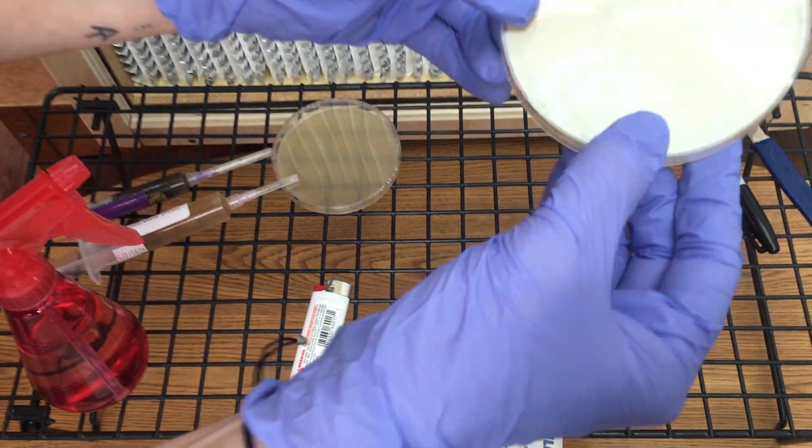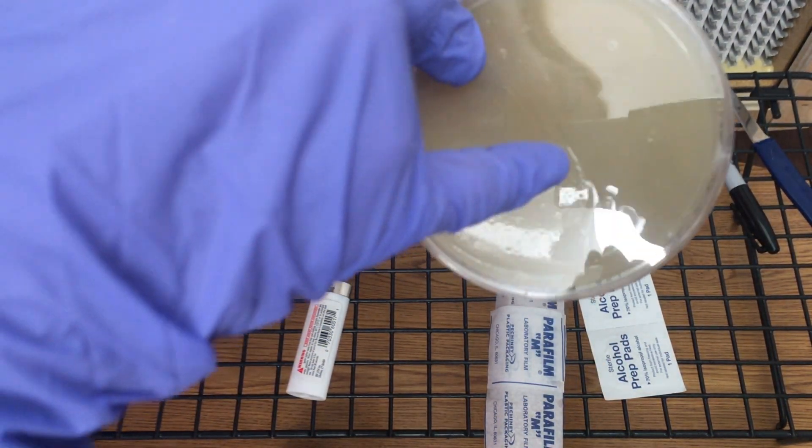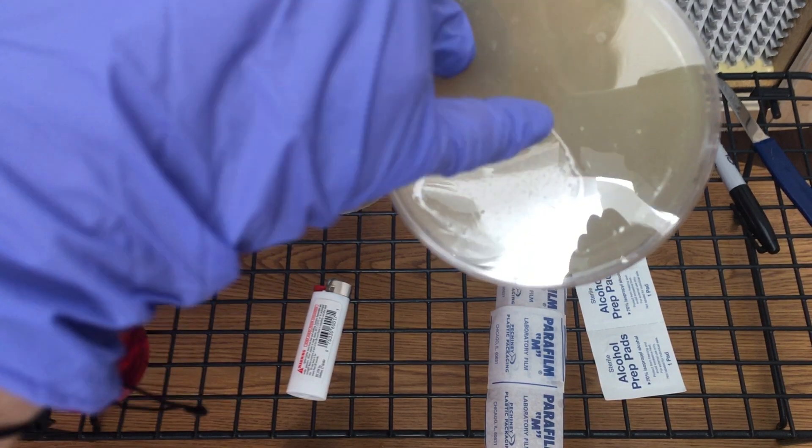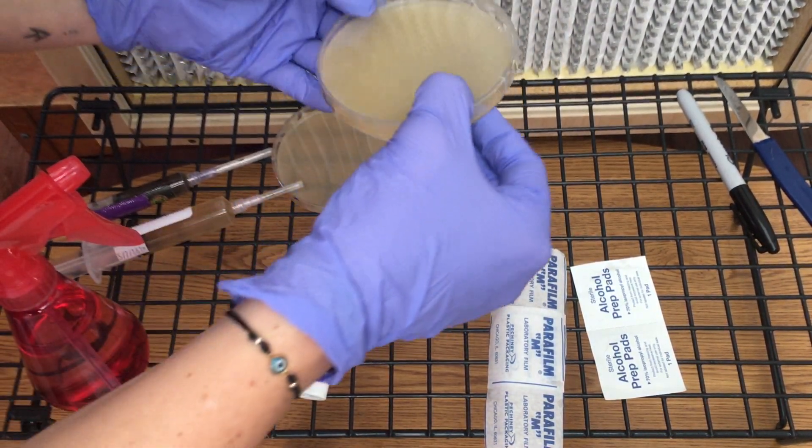You can kind of see the spores a little bit in the shadows, right there. They're very hard to see but they are there. Then once you're finished inoculating your agar,